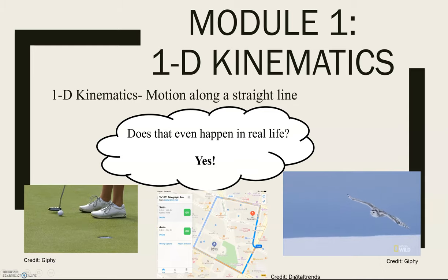And then finally, as just another example, we see it in nature as well. So birds flying or animals moving, we've got fish swimming or whales swimming, all those motions can be broken up into motion in one dimension and that can be described using 1D kinematics.